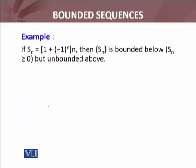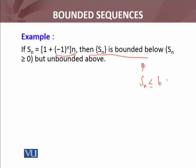Let's consider several examples about bounded sequences. The first example: S_N is defined by (1 + (-1)^N) * N. The conclusion is S_N is bounded below. Because if N is odd, then (1 + (-1)^N) becomes (1 - 1) = 0, so S_N = 0. If N is even, the terms increase towards infinity since we are multiplying by N, so we cannot find any real number such that S_N is less than or equal to it for all N.